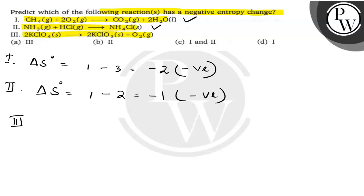Now, in reaction 3, the entropy change will be in the product side it is 1, that is the gas, minus 0, which will be equal to 1, that means positive.